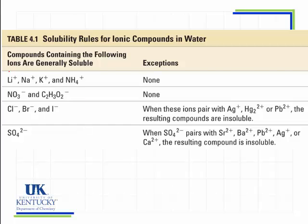We have to be able to read the table and know what it means. The first part of the table are those compounds that are soluble. An ionic compound is going to have a cation and an anion. If the cation is one of these cations, it will always be soluble. There are no exceptions. If the anions are nitrate or the acetate ion, it will always be soluble, no exceptions.